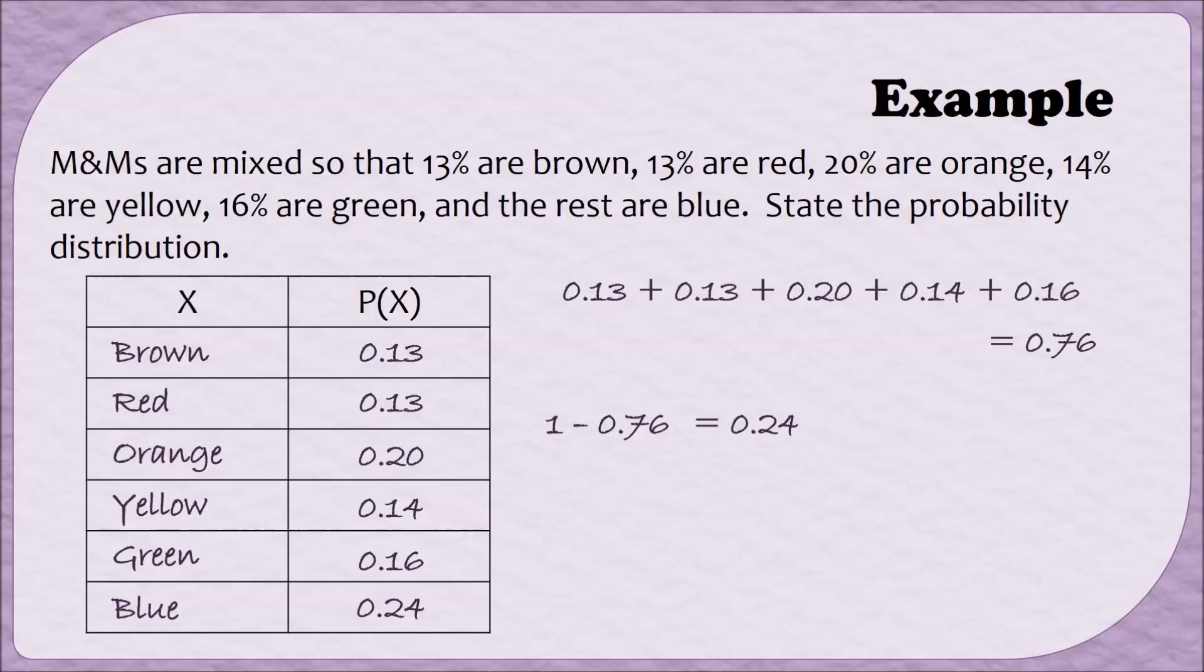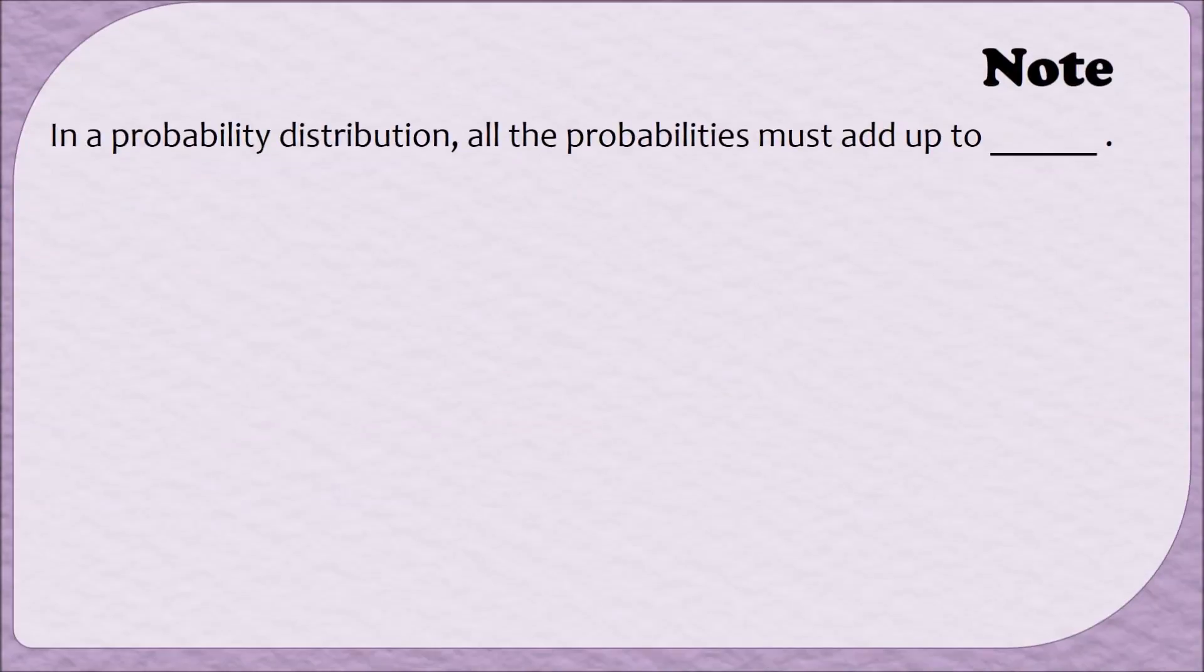And that's how you can create a probability distribution. Here's a note. In a probability distribution, all of the probabilities have to add up to be 1. This is just like when we made relative frequency distributions earlier. All of the relative frequencies had to add up to be 1. When you have a pie graph, all of the percentages have to add up to be 100%. It's the same idea, just in a new context.